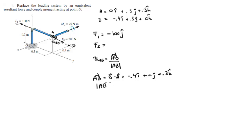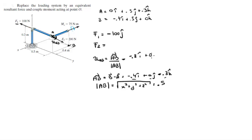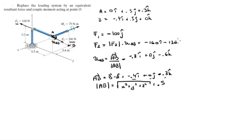We find the magnitude of this vector using the square root of the sum of squares of its components, and we get a magnitude of 0.5. Dividing the three components by 0.5 gives us the unit vector: -0.8i + 0j - 0.6k. So F2 equals 200 times the unit vector, giving us -160i - 120k.